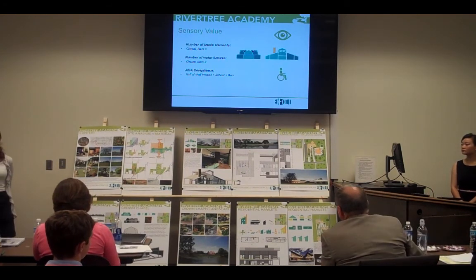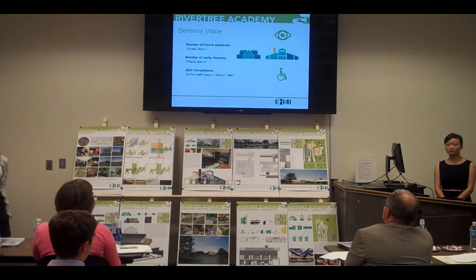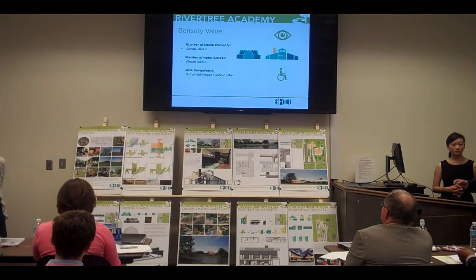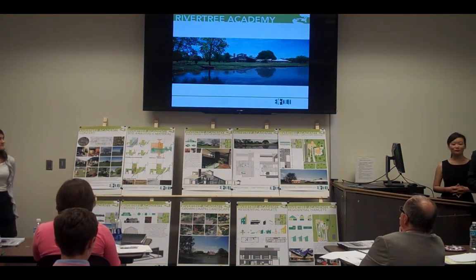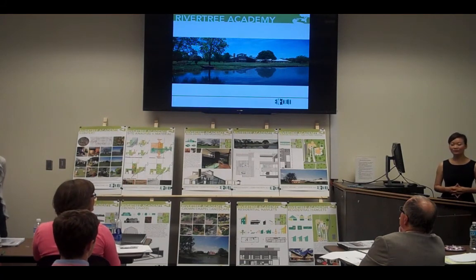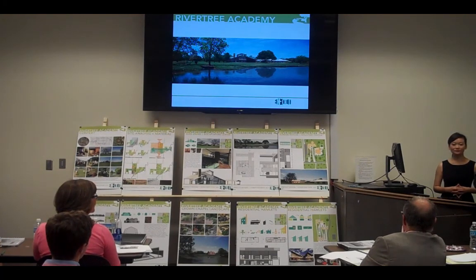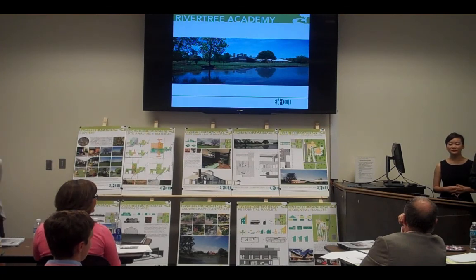The next element of value is sensory. There are two iconic buildings on the site — the chapel and the barn — and they have been located at very critical positions next to existing water features, which emphasize their symbolic values. This concludes our presentation from Texas A&M University. The River Tree Academy will be a place for all these students to thrive and impact Como and the world. Thank you all for being here, for your attention, and for the time allotted to us.